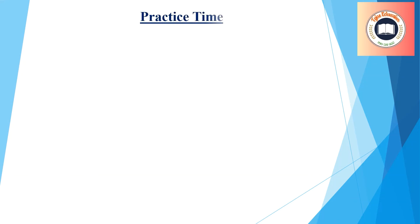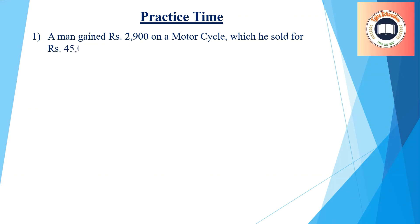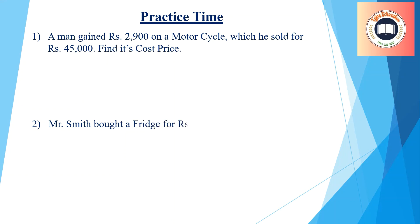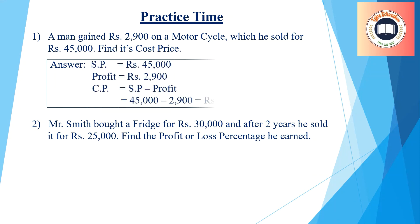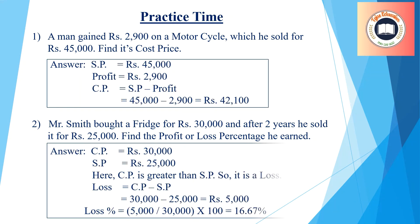Practice time. First question: A man gained Rs. 2900 on a motorcycle which he sold for Rs. 45,000 — find his cost price. Second question: Mr. Smith bought a fridge for Rs. 30,000 and after 2 years sold it for Rs. 25,000 — find the profit or loss percentage he earned. Once the answers have come, you can check and rectify your answers.